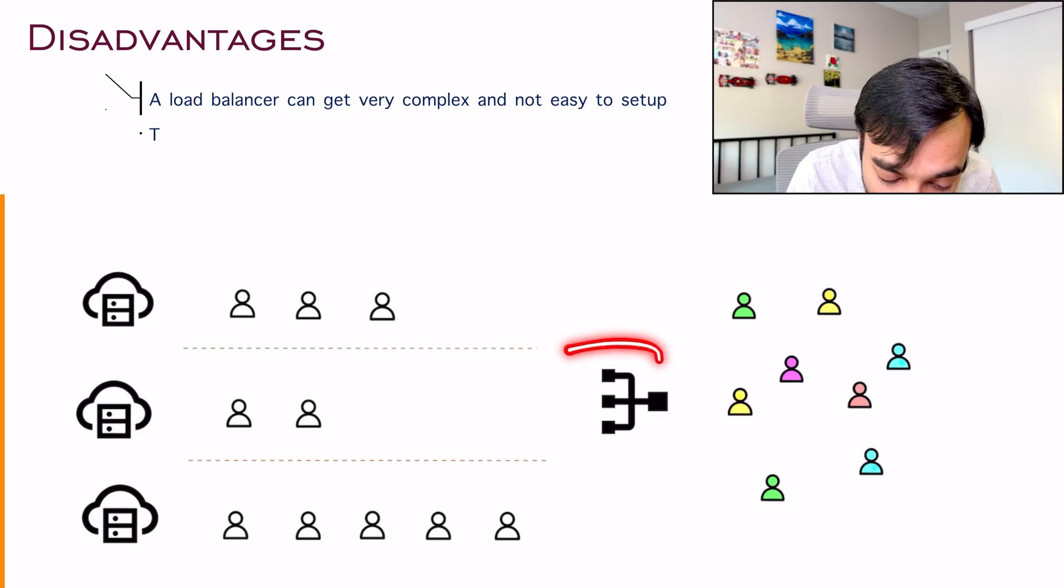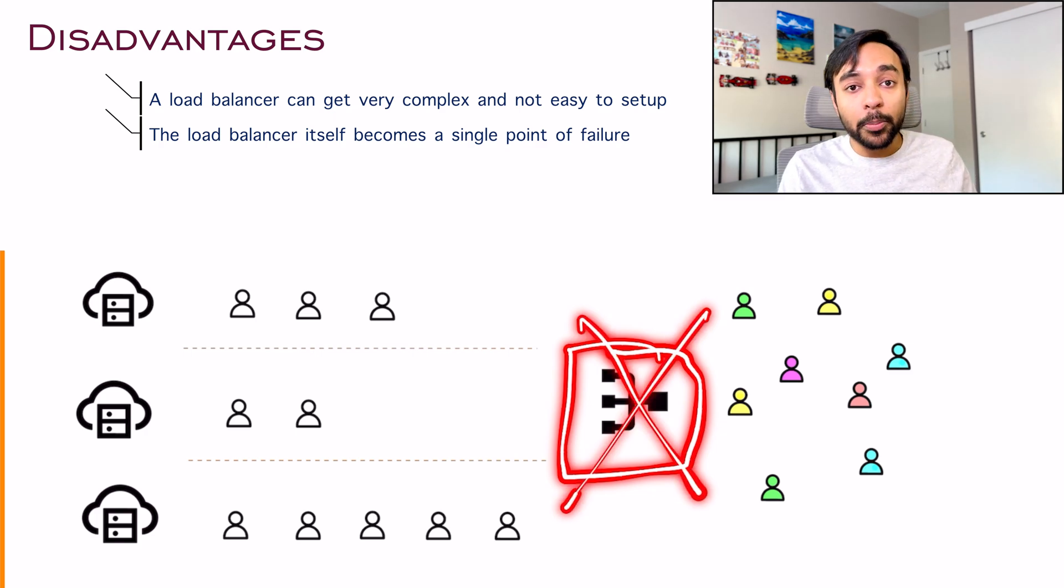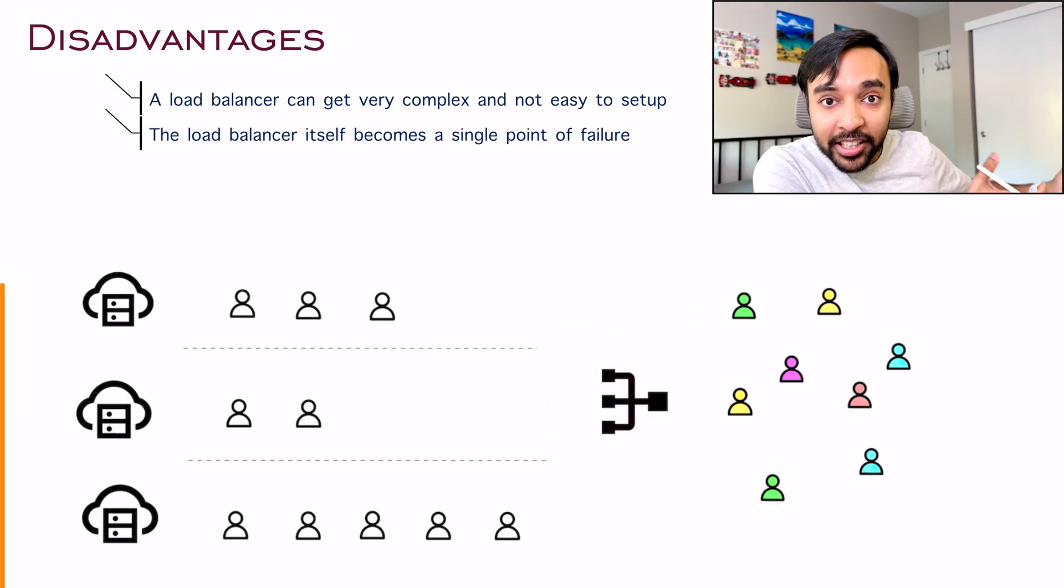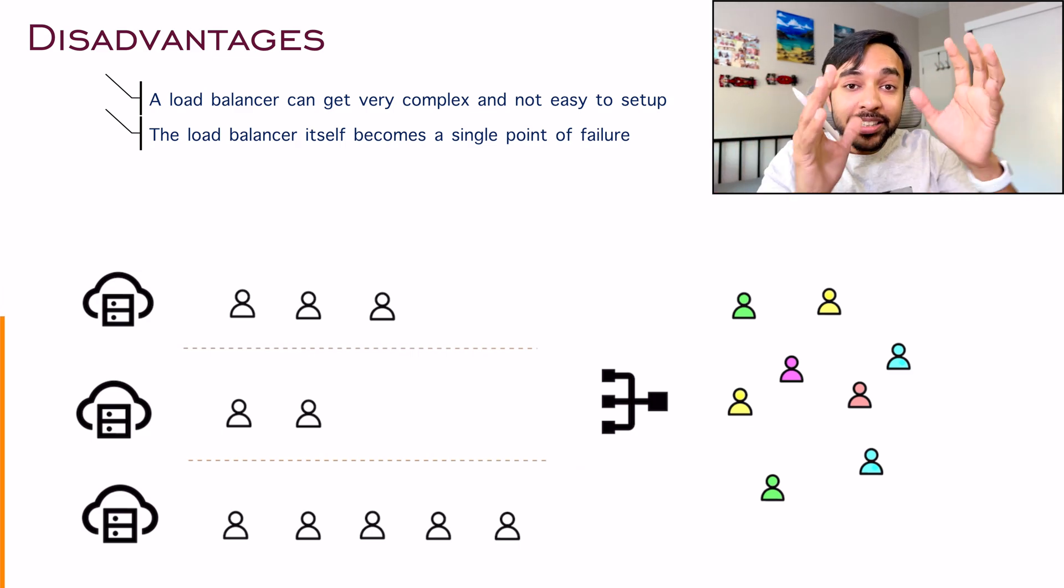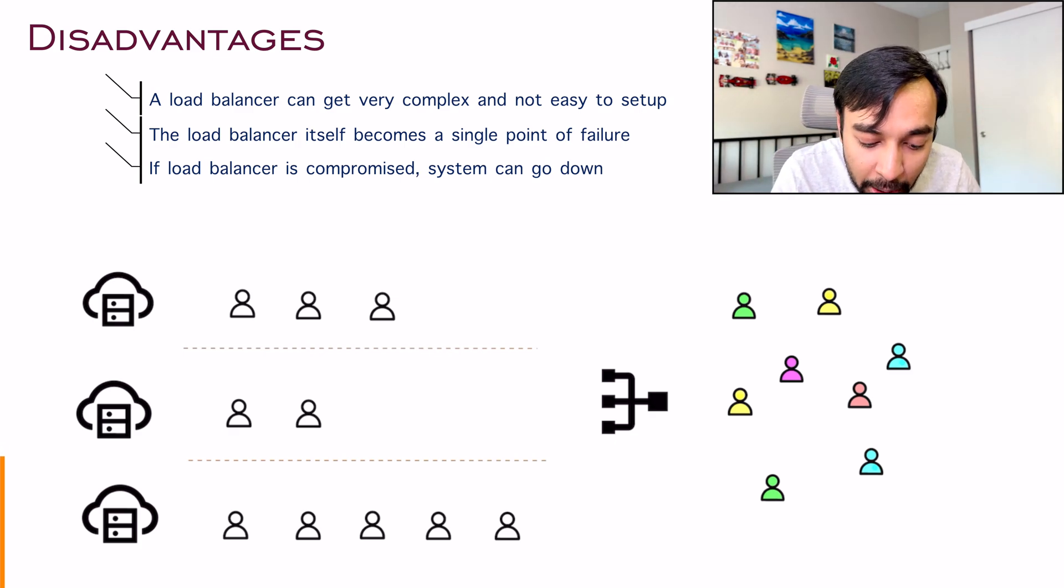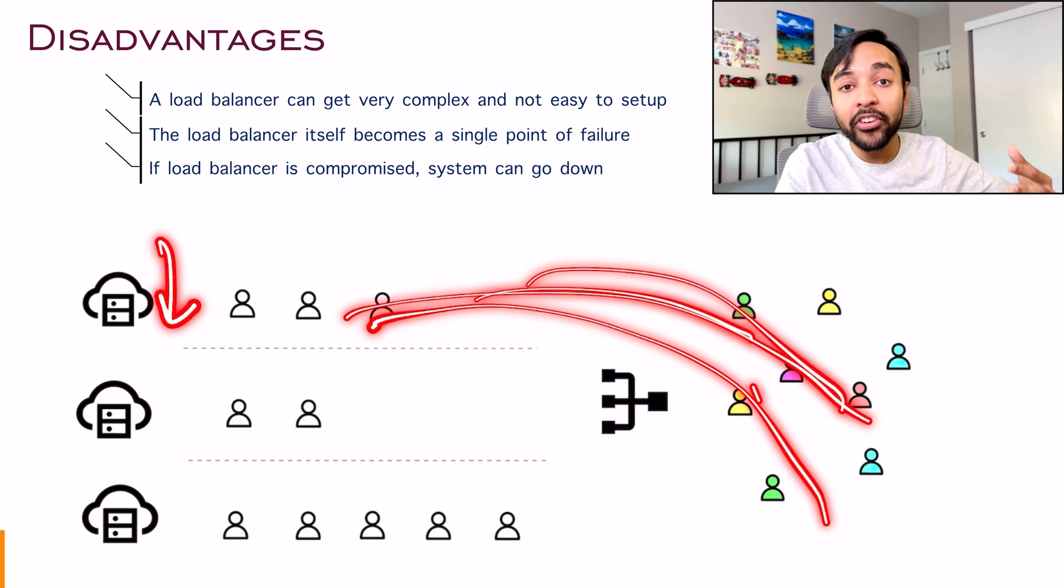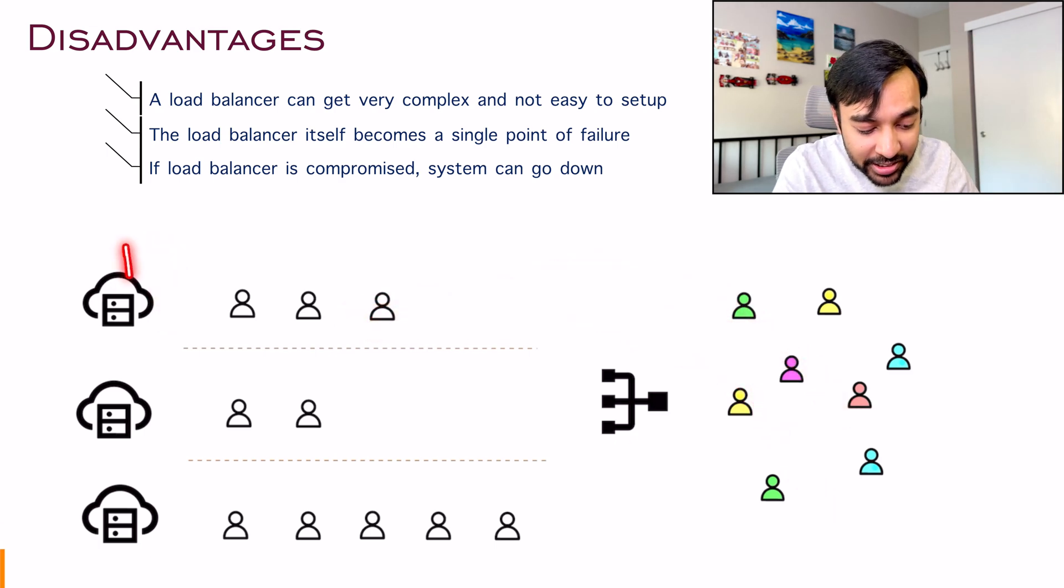The other disadvantage is that this load balancer itself, this becomes a single point of failure. Because think about it. If this load balancer goes down, then these clients cannot even connect to the servers, right? Let alone having a distributed system. So this load balancer becomes your single bottleneck and your entire system could crash. So it is always essential to keep this in mind. And naturally, the third parameter is always security. You want to make sure that you have all the security protocols in place when you're implementing a load balancer. Because if this load balancer gets compromised, then you can divert all of your traffic to just one server. And then this server can get overwhelmed and it can go down. So your entire system once again crashed.